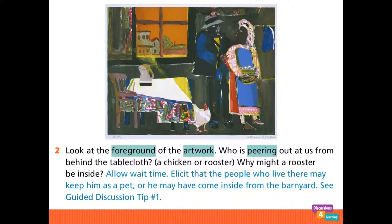Now let's look at question two in this same lesson. Once again, the previously learned vocabulary is highlighted in teal. Notice the question: 'Why might a rooster be inside?' Each lesson includes several open-ended guided discussion questions that are designed to engage and challenge your least and most advanced students. The guided discussion tips in the sidebars provide research-based support for helping teachers lead academically productive discussions that focus on higher-order thinking and equitable participation among all students.